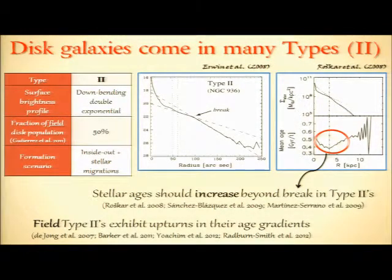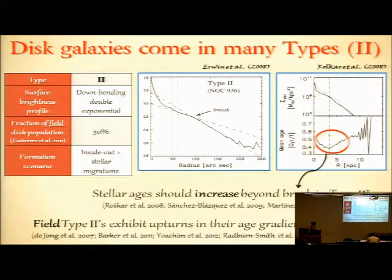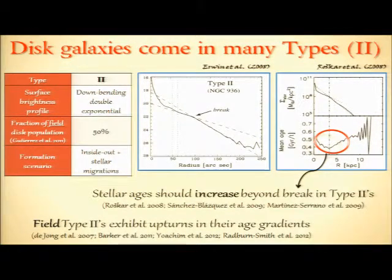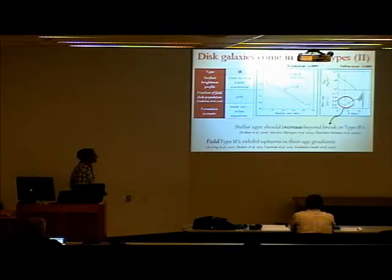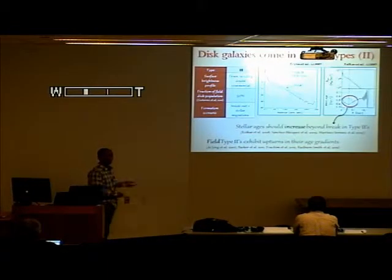The second type of disk galaxy, the type 2s, are found most frequently within the field, making up about 50% of all disks there. They differ from the type 1s in that their light profiles are described by two exponentials, with the outer one being the steeper of the two. Roshkar and Victor de Batista were the first to study the origins of these galaxies in detail and suggested they could be formed by coupling outward migrations of stars to a disk that formed inside out.